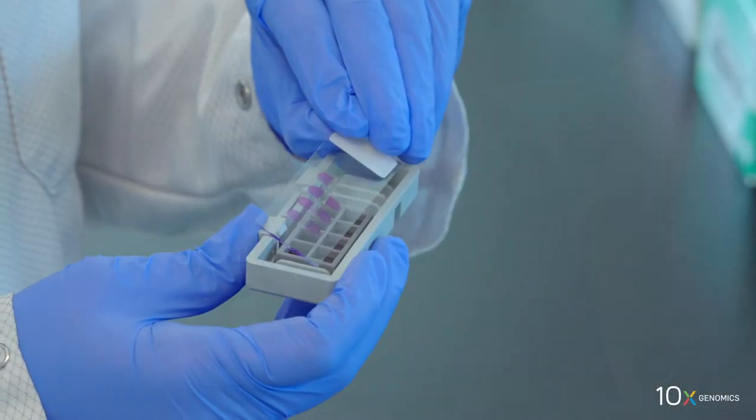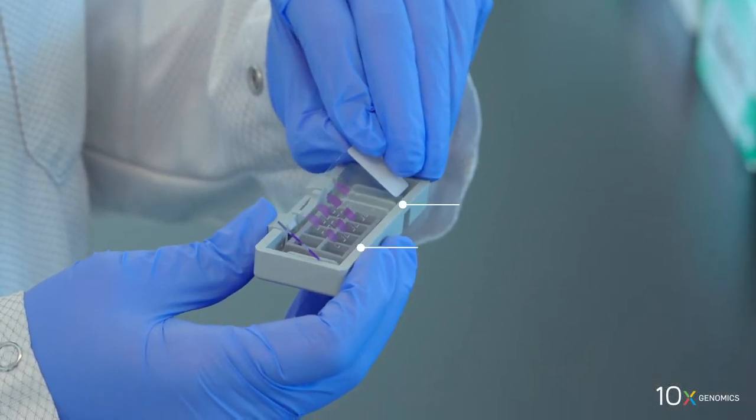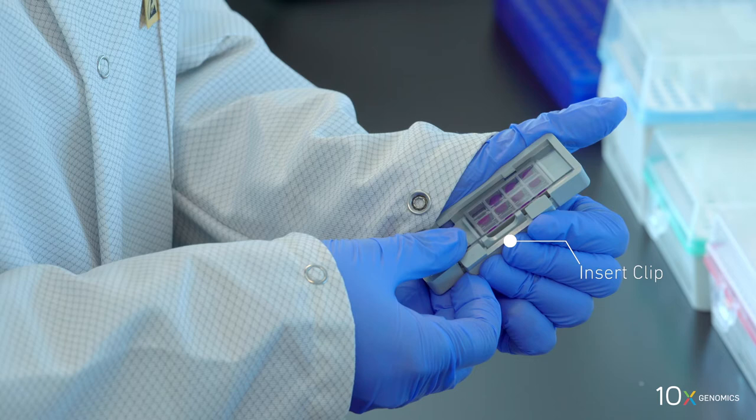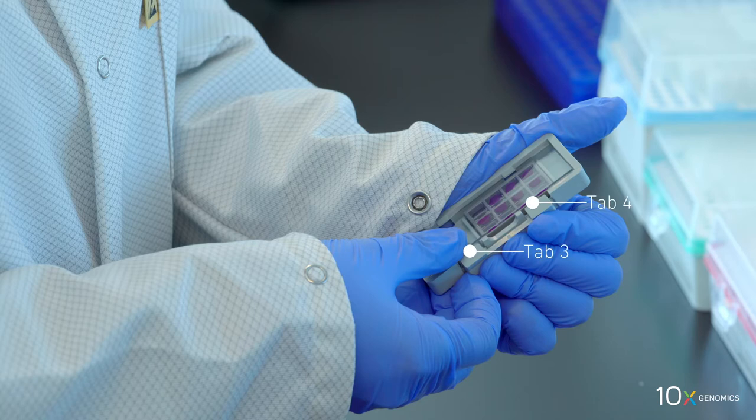Insert the slide under tabs 1 and 2. Ensure that the long edge of the slide is flush with the side of the slide cassette. Press the insert clip very firmly by applying even force on the lower part of the insert clip. Press down on the slide with a finger in between tabs 3 and 4 until the slide is under each tab.